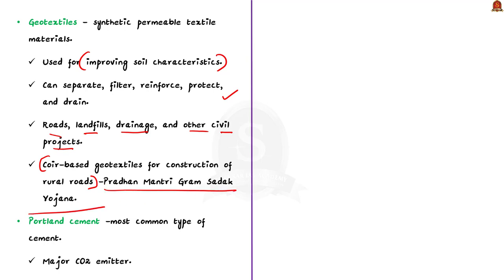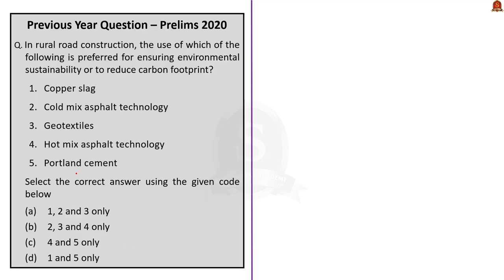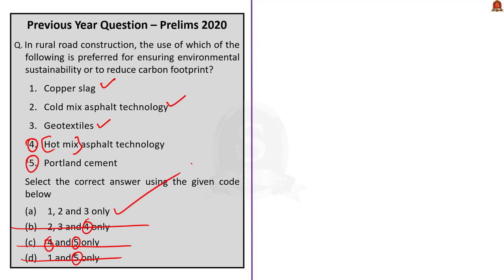Now let us see about Portland cement. Portland cement is the most common type of cement and is used in construction all over the world. However, Portland cement industries are one of the major emitters of carbon dioxide. From the discussion we can see that hot mix asphalt technology and Portland cement are not environment friendly and do not reduce the carbon footprint, whereas copper slag, cold mix asphalt technology and geotextiles are environment friendly and sustainable. So the answer is A: 1, 2 and 3 only.